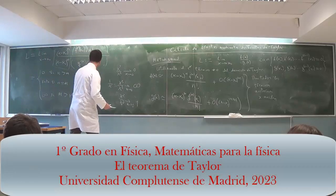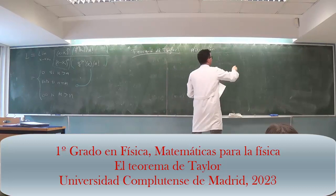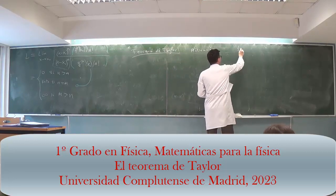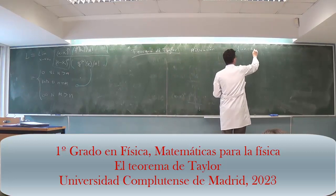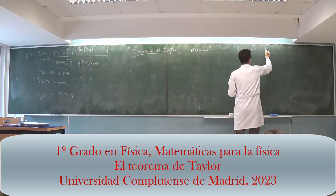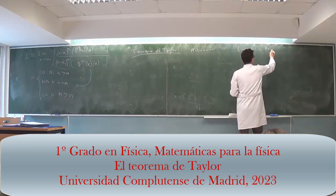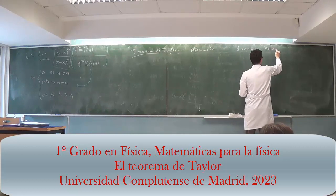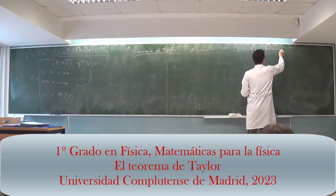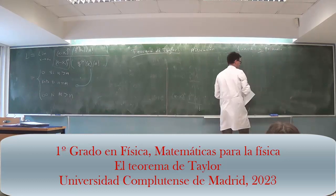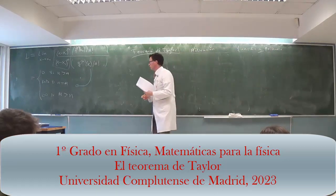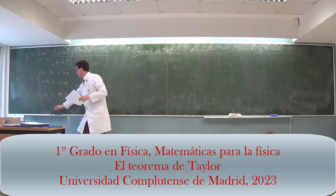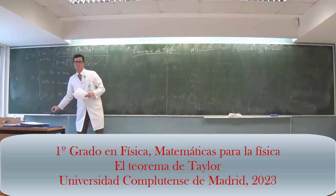We are going to study the theory of Taylor. We are approximating a function by a polynomial, and I wonder what error we have when we use that approximation.